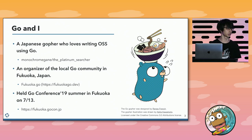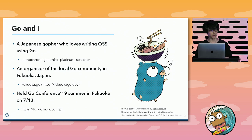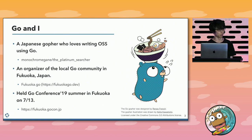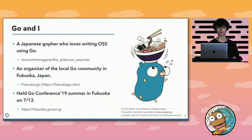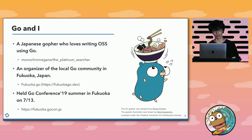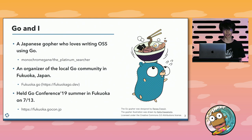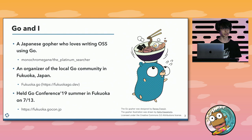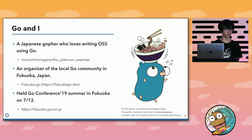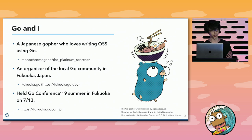Let me introduce the relation between Go and me. I am a Japanese gopher who loves writing OSS using Go. My popular repository is the Platinum Searcher, which is a fast grep tool. I am also an organizer of the local Go community in Fukuoka, Japan. We held Go Conference 2019 Summer in Fukuoka on July 13th, two weeks ago.